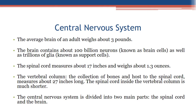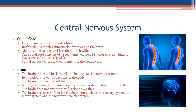The central nervous system is divided into two main parts: the spinal cord and the brain. The spinal cord is located inside the vertebral column and its function is to relay information to and from the brain. It is about 16 inches long and less than 1 inch wide, consisting of 31 segments: cervical 8, thoracic 12, lumbar 5, sacral 5, and coccygeal 1. Spinal nerves exit from each segment.